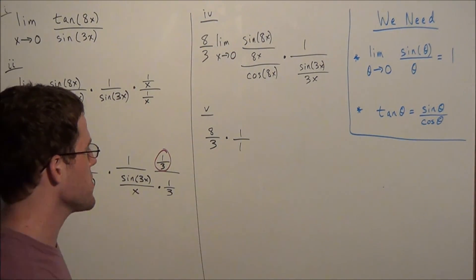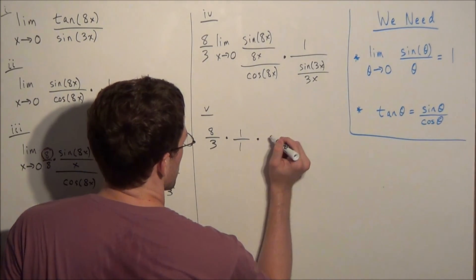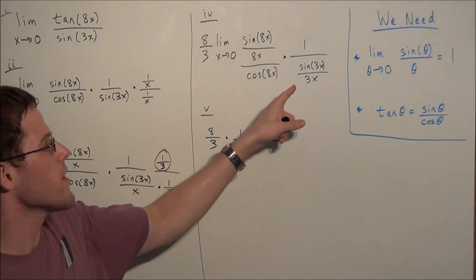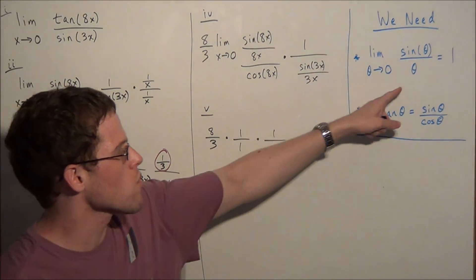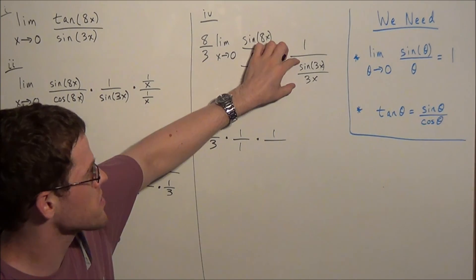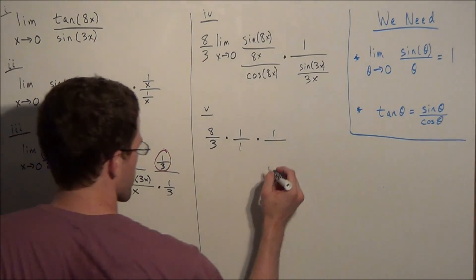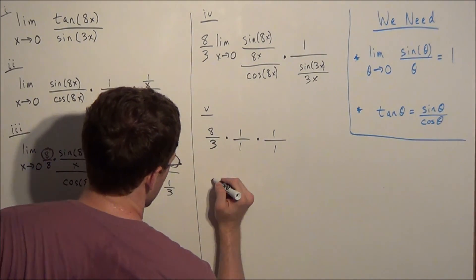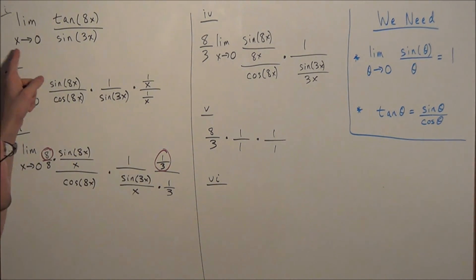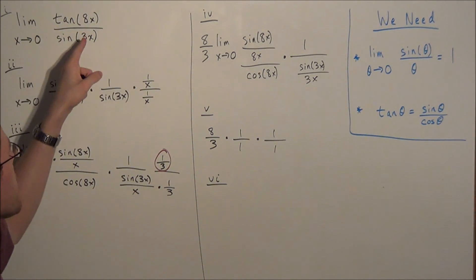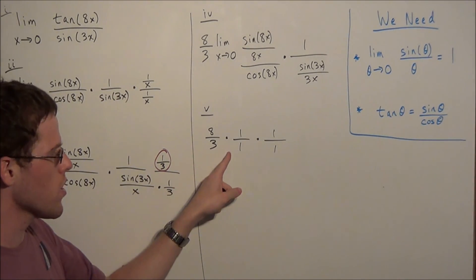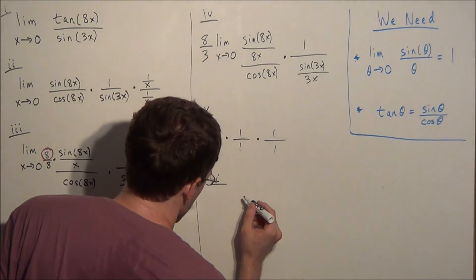For the last piece, we have times 1 over the limit as x approaches 0 of sine 3x over 3x, which by our identity also equals 1. So for line 6, the limit as x approaches 0 of tangent of 8x divided by sine of 3x equals 8 thirds times 1 times 1, which is just 8 thirds.